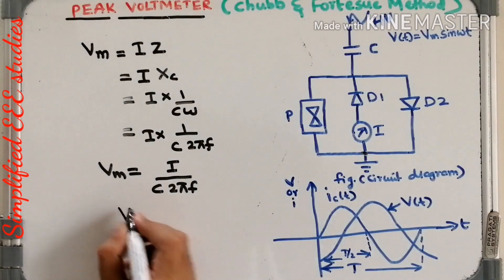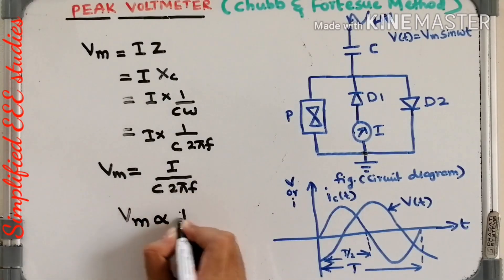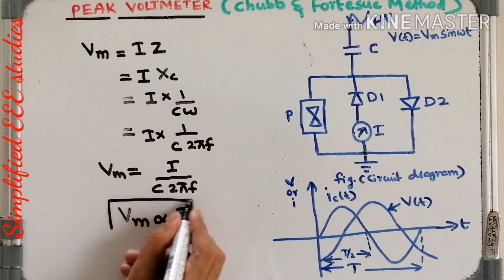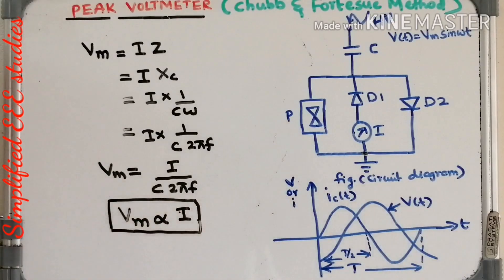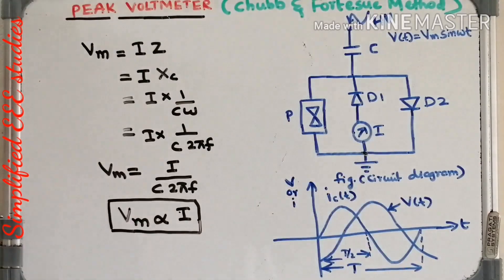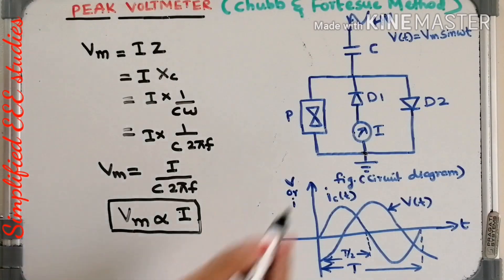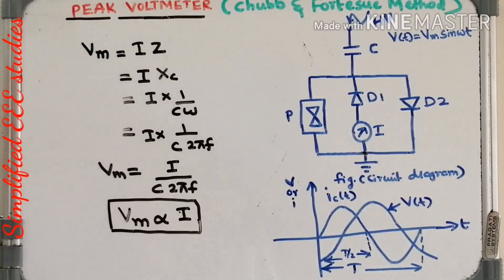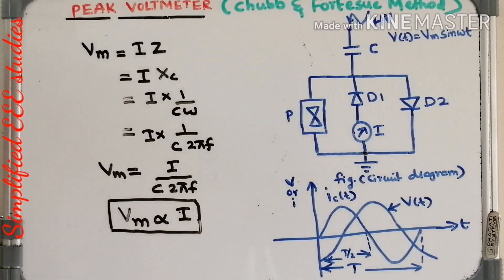From this relation we can say that Vm is directly proportional to I. Vm is the peak value of the high voltage AC, and I is the rectified current — which will be purely DC. So the peak value of high voltage AC is directly proportional to the rectified current I, and how much peak value you are applying can be measured in terms of the rectified current I.